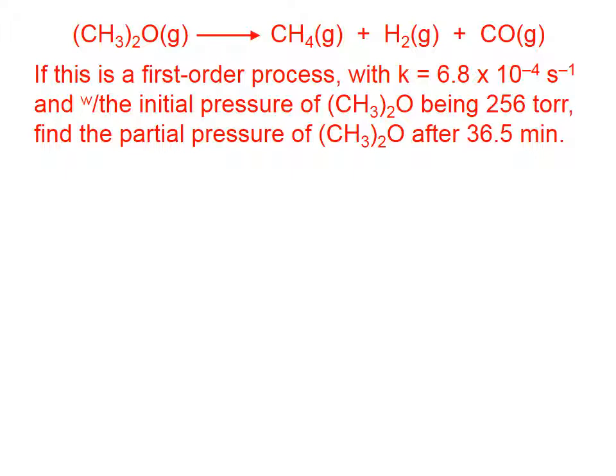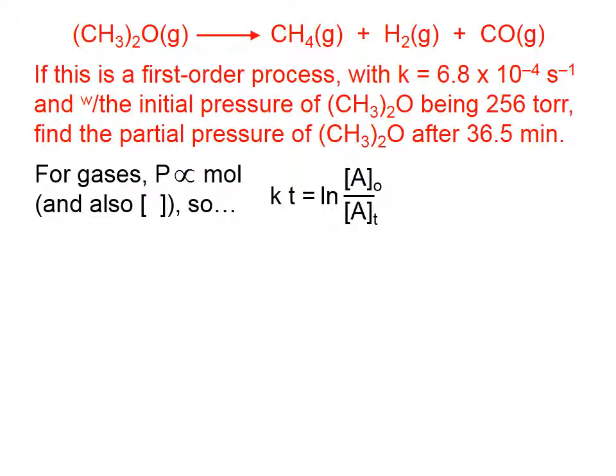Let's try an example. If this is a first-order process and there's your rate constant, you've got the initial pressure of the reactant is 256 torr. Find the partial pressure of that same reactant after 36 and a half minutes. For gases, pressure is proportional to moles and also to concentration. So I'm going to change it to pressures, which you can do if you have a gaseous system.